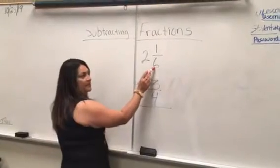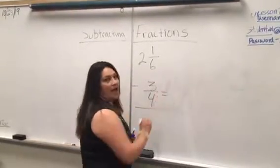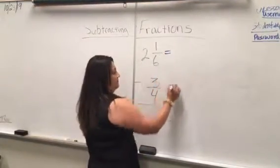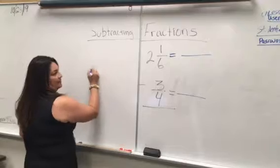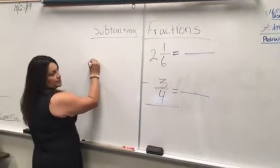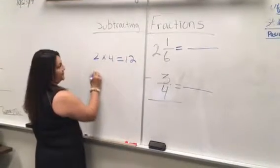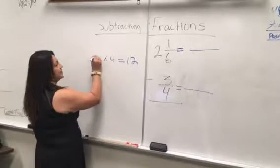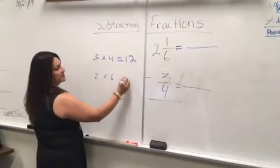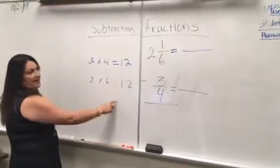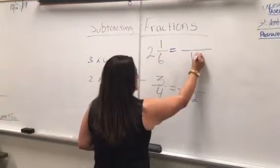Since the denominators are different, we need to find a common denominator. 6 times 2 equals 12, and 4 times 3 equals 12, so 12 is our common denominator.